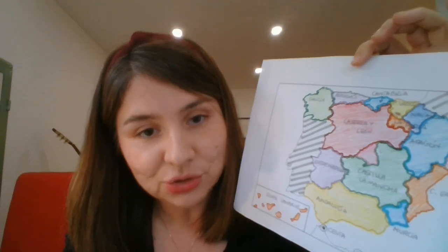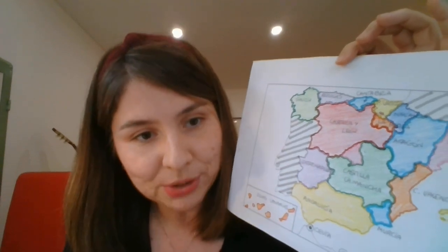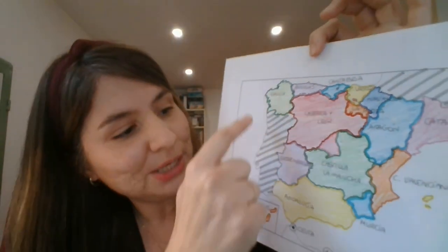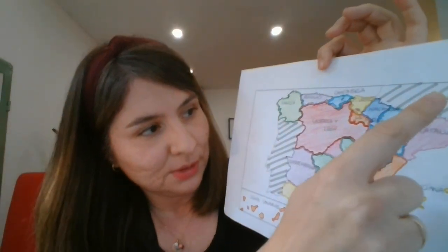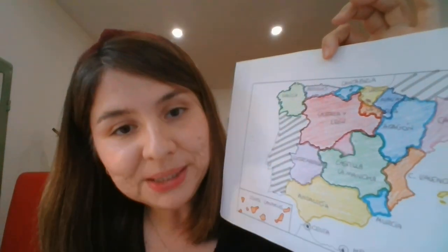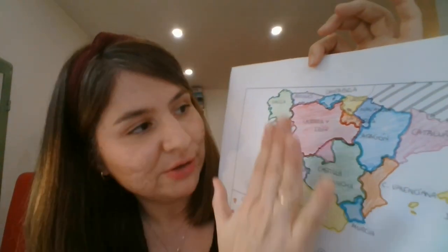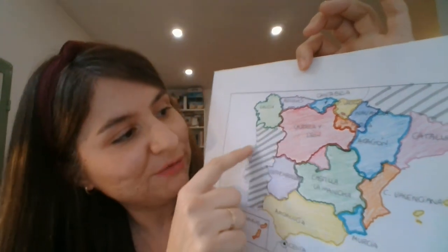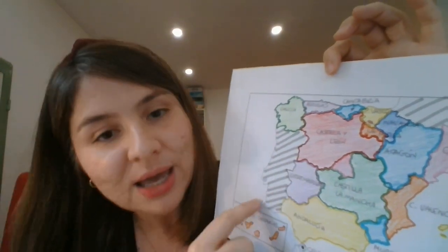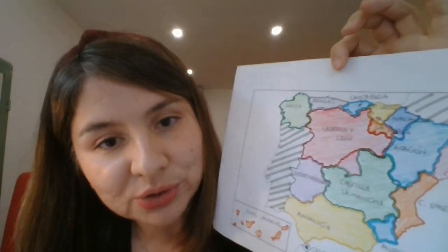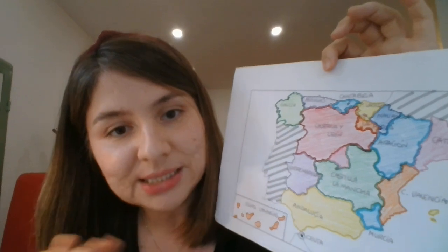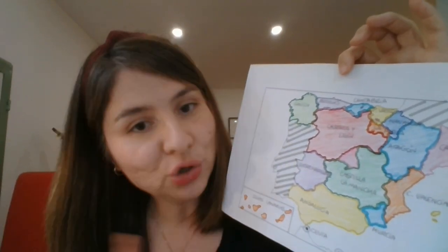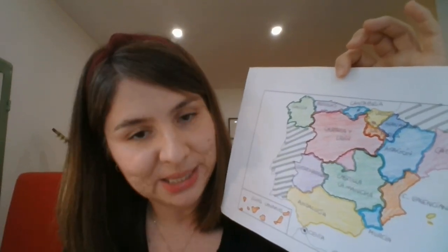Some special things you need to remember. This is a map of the Iberian Peninsula. In the Iberian Peninsula, we have Spain, but also we have these gray lines here — and this is Portugal. Portugal is a different country; Portugal is not a part of Spain.